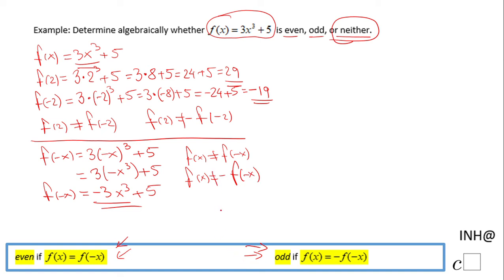Neither statement works, so the function is neither odd nor even. Generally, when you have a polynomial function with a mixture of even powers and odd powers, the function is neither.